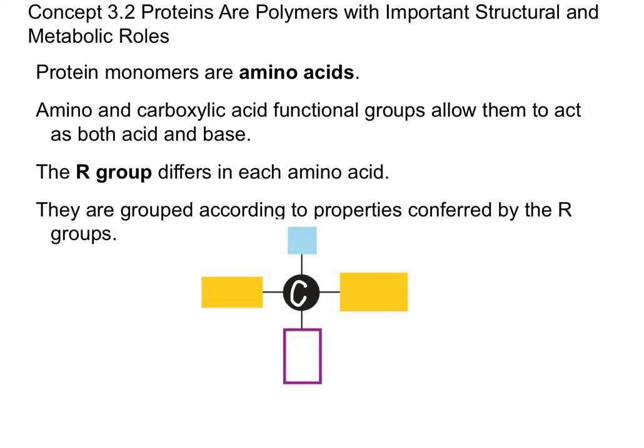Connected to that central carbon, we also have a hydrogen. Traditionally, we put our central carbon in the middle and the hydrogen on top. Connected to the central carbon, we also have groups called amino groups and carboxyl groups. An amino group consists of an N for nitrogen and two hydrogens. The carboxyl group is a carbon, two oxygens, and a hydrogen — written as COOH. These amino groups and carboxyl groups are important because they allow amino acids to act as both an acid and a base.